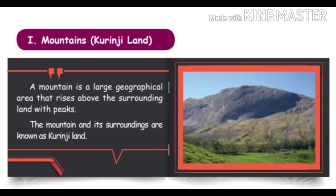First, let us see about Kurunji land — the mountain region. A mountain is a large geographical area that rises above the surrounding land with peaks. The mountain and its surroundings are known as Kurunji land. A mountain is an elevated place higher than a normal place.